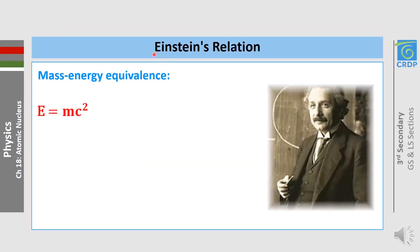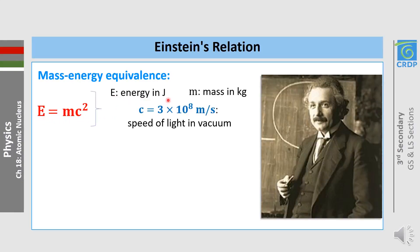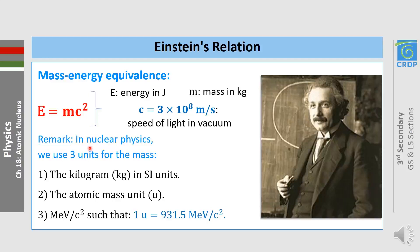Let's talk about Einstein's relation, the mass-energy equivalence: E = mc², where E is energy in joules, M is mass in kilograms, and c is the speed of light in vacuum, equal to 3 × 10⁸ m/s. In nuclear physics, we can use three units for mass: the SI unit in kilograms, the atomic mass unit U, and the mega electron volt per c squared, such that 1 U = 931.5 MeV/c².